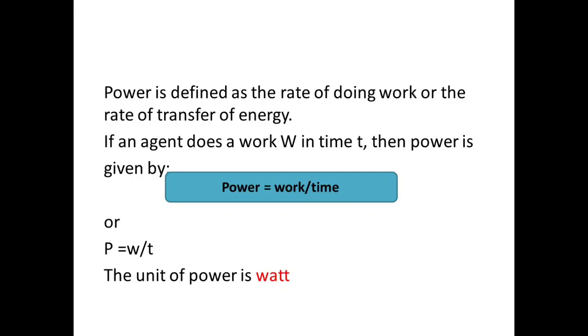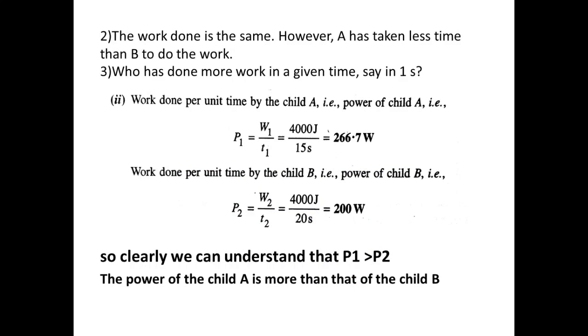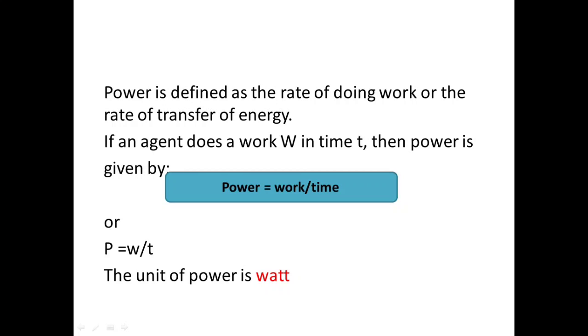Power is defined as the rate of doing work or the rate of transfer of energy. If an agent does a work W in time T, then power is P, which equals work by time, or P equals W by T. The unit of power is what we have seen through this example. Work done per unit time. Child A, P1 equals W1 by T1. The work done is 4000, time taken 15 seconds, so he got 266.7 Watts. The SI unit of power is Watt.